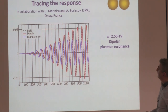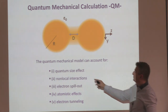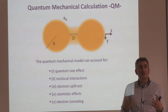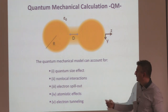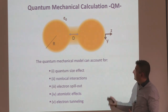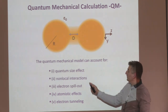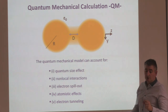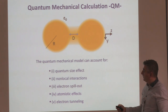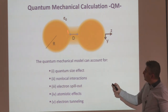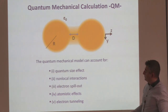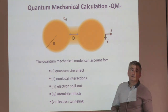By doing this quantum mechanical approach, you account for quantum size effects — how the electron gas responds under quantum confinement. Non-local interaction: it's not just epsilon of omega, but epsilon of q and omega. Also electron spill-out, which is so important in the cavity, atomistic effects, and electron tunneling. That's what I'm going to show you.